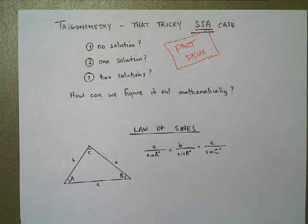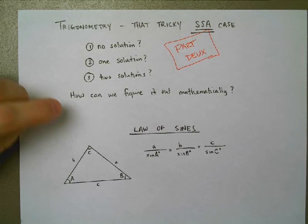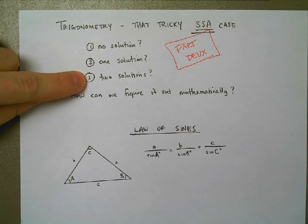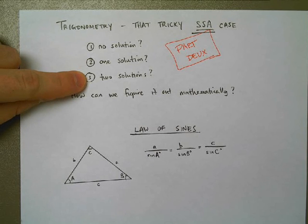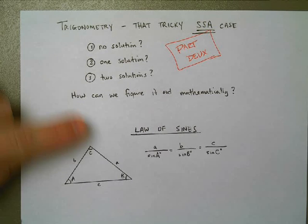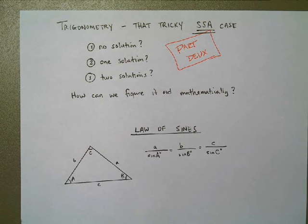Okay, so this is the second part of that SSA case video. We're talking about how can we tell the difference between a one solution and a two solution triangle when we're dealing with SSA, side-side angle. And we're using the law of sines in order to help us out.